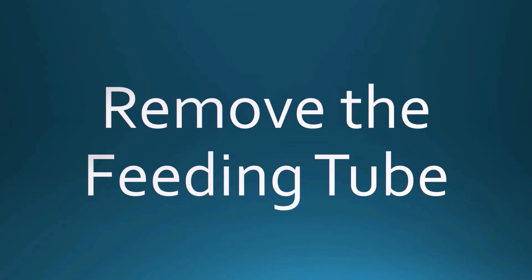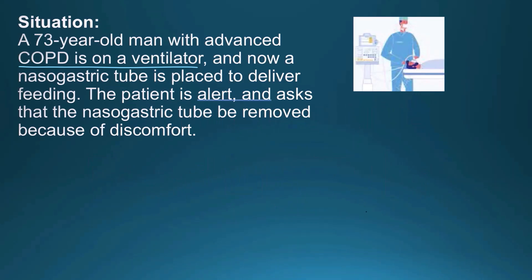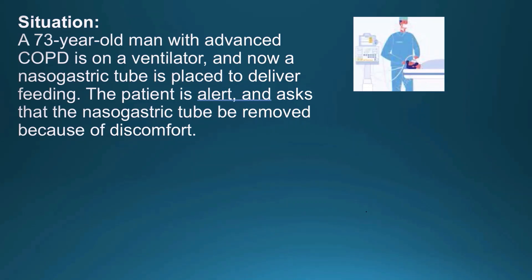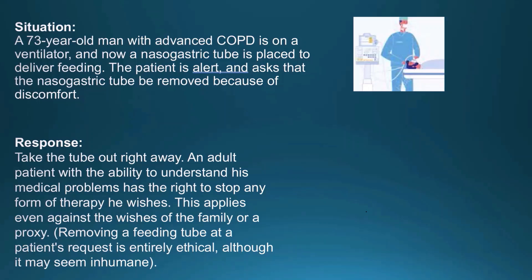Removing the feeding tube. A 73-year-old man with advanced COPD is on a ventilator and a nasogastric tube is placed to deliver feeding. The patient is alert and asks that the tube be removed because of discomfort. Can we remove it? This is not physician-assisted suicide — this is just removing therapy. Take the tube out right away. An adult patient with the ability to understand his medical problems has the right to stop any form of therapy he wishes, even against the wishes of the family or proxy.